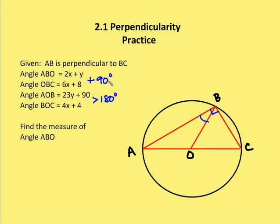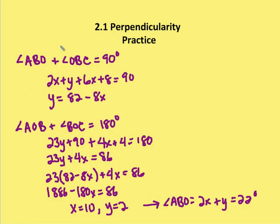We're going to use what's given to figure out the measure of angle ABO. We know that ABO plus OBC equals 90 degrees. Angle ABO is 2x plus y, and angle OBC is 6x plus 8, so they sum to 90 degrees. Simplifying, we find that y is equal to 82 minus 8x.